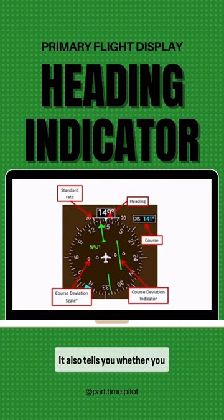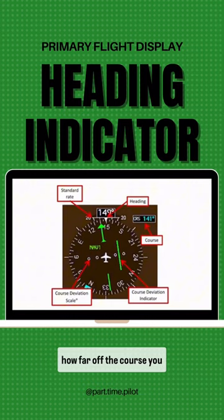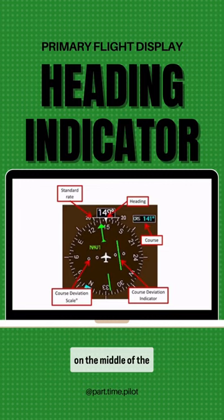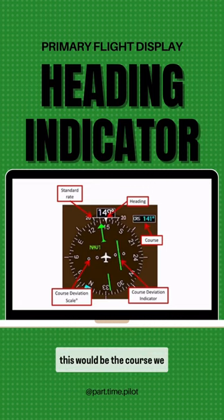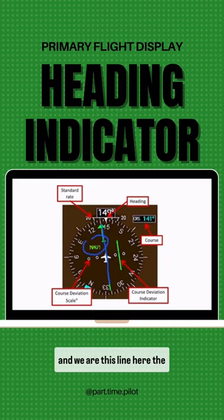It also tells you whether you are on your desired course, or how far off the course you are, using the CDI and CDI scale in the middle of the instrument. Here we see the course deviation indicator — the CDI — that's this green line right here. In this instance, this would be the course we want to be on using NAV1.